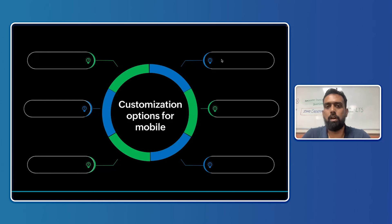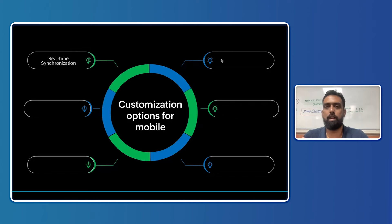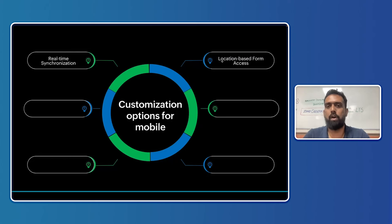Deployment is seamless: when you develop an application for mobile in web, you can directly use it on mobile and tablets. Among the most important customization options available, the first is real-time synchronization — any editing done in web is immediately visible on mobile. When you change a theme, for example, that change appears immediately on mobile as well.